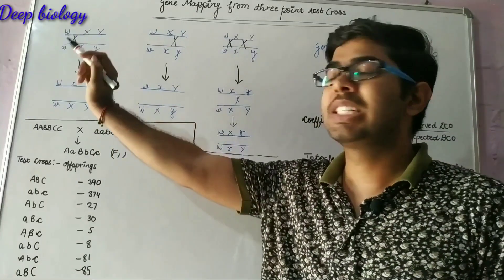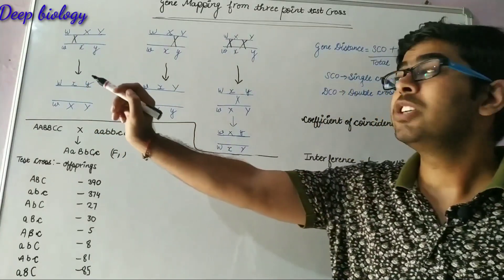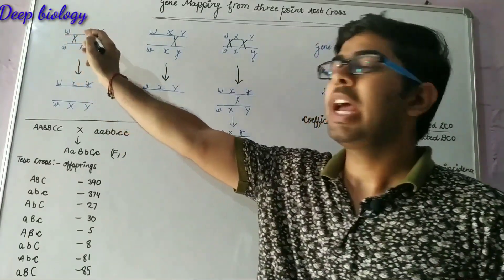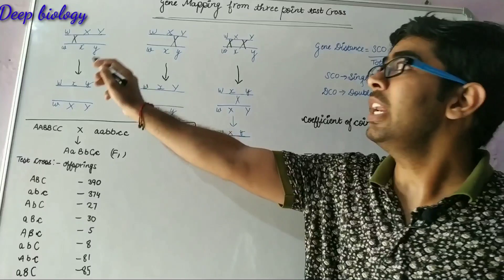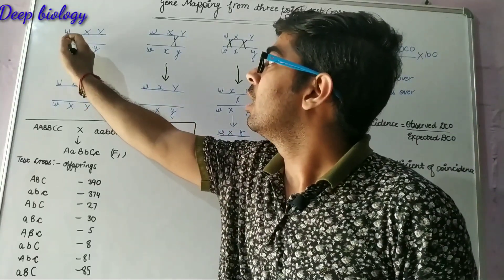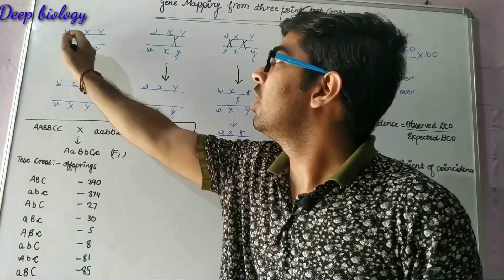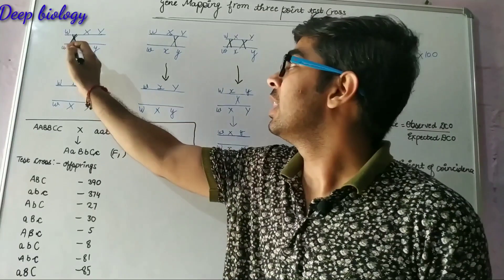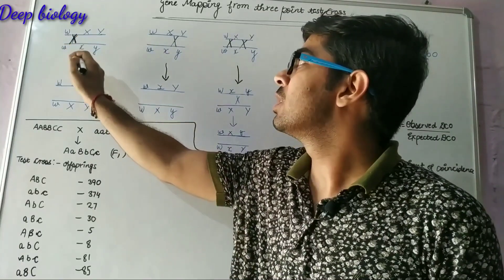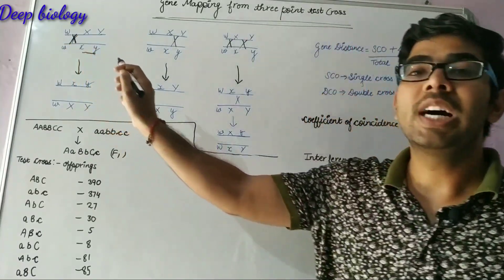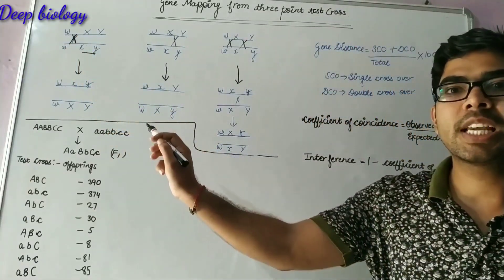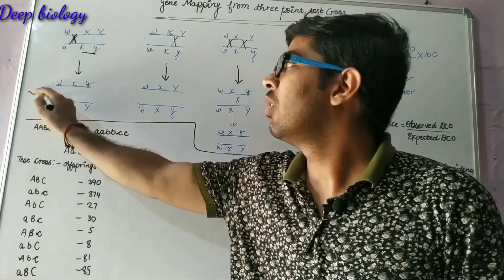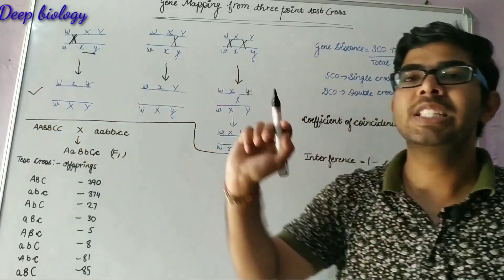In the first case, when there is crossing over between W and X, the crossing over occurs here and this leads to the swapping of small x and small y with capital X and capital Y genes. And we get the following combination.